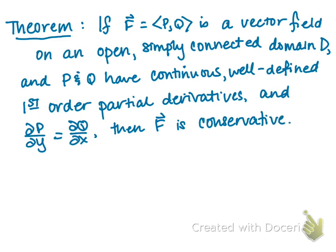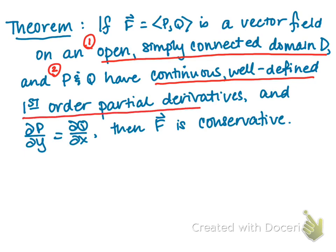So there are three conditions needed to prove a vector field is conservative: number one, the domain is open and simply connected; number two, the first-order partial derivatives of P and Q are continuous and well-defined; and number three, partial P partial y equals partial Q partial x. I won't prove this now — we need the next section — but this gives a really useful way for proving F is conservative.